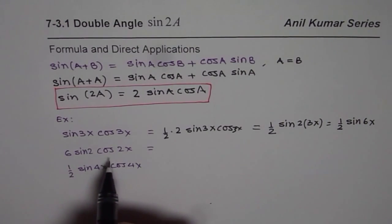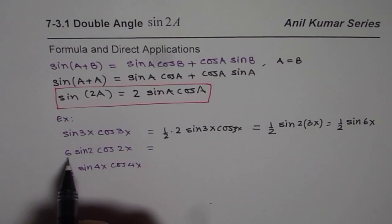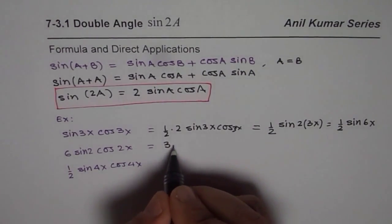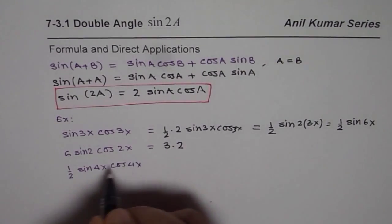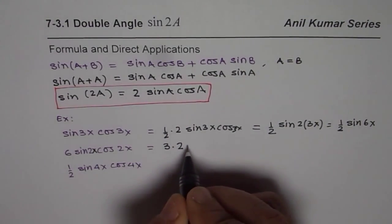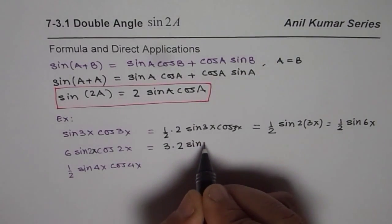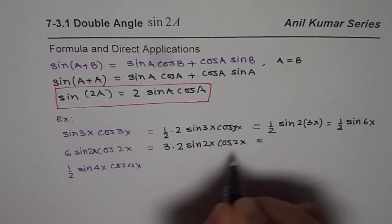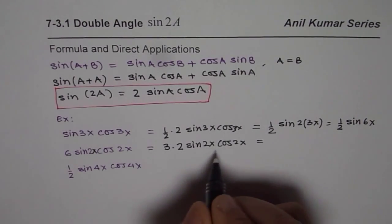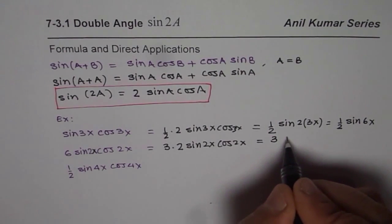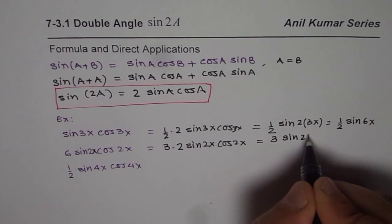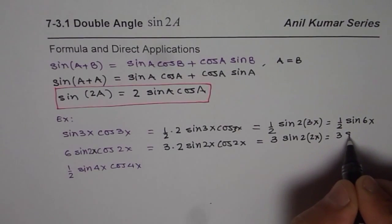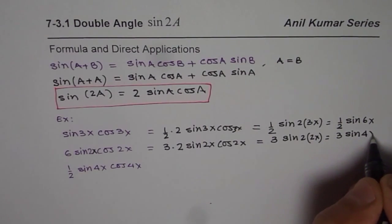So same method you can apply here also. If we have a product here, which is more than 2, it could be split as: 6 could be written as 3 times 2. Then we can have sine 2x cos 2x. And now I can combine these terms and write it as 3 times sine double of 2x, which gives me 3 times sine 4x.